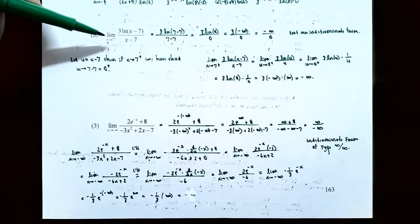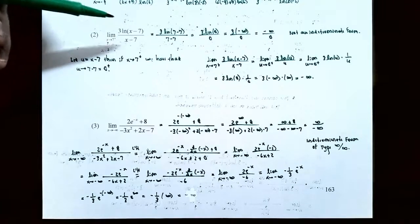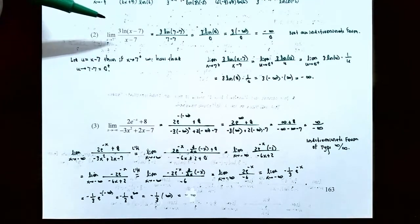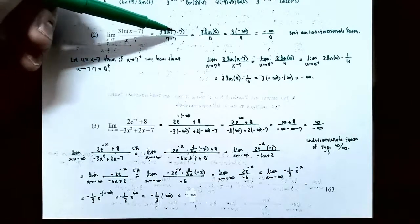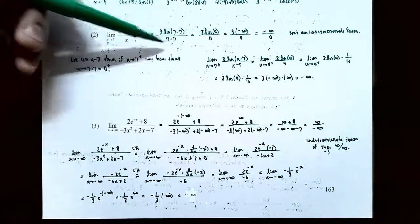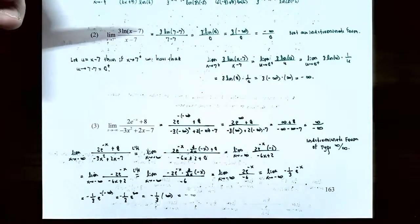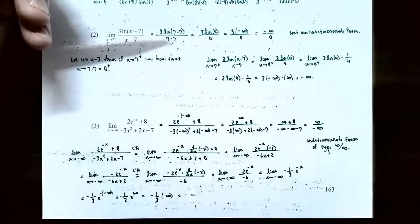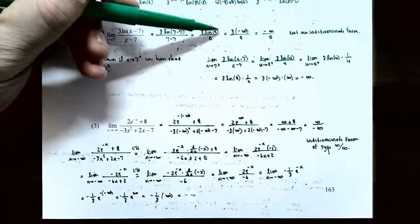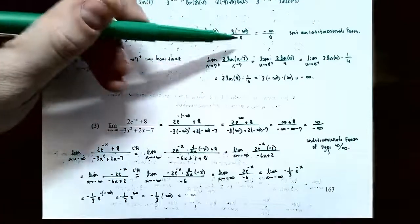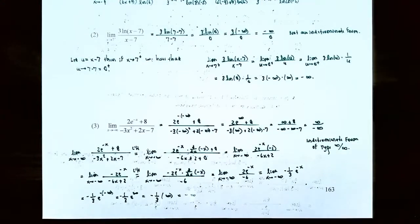Number two: the limit as x approaches 7 from the right of 3·ln(x − 7) in the numerator, divided by (x − 7). Since x is approaching 7 from the right, we substitute: numerator gives 3·ln(7 − 7) = 3·ln(0), and the denominator gives 7 − 7 = 0. Since ln(x) approaches −∞ as x approaches 0, the numerator is 3·(−∞) = −∞, and the denominator is 0. So we have −∞ divided by 0, which is not an indeterminate form of type 0/0 or ∞/∞, so we must use a different method.